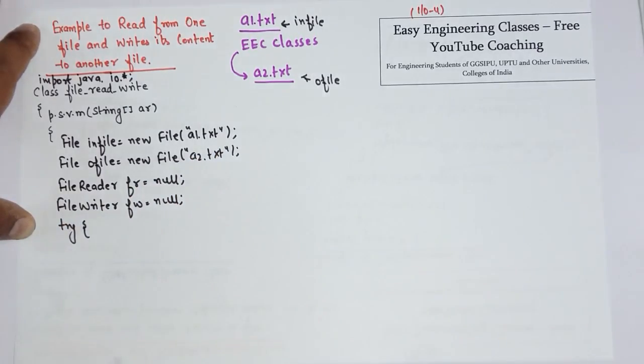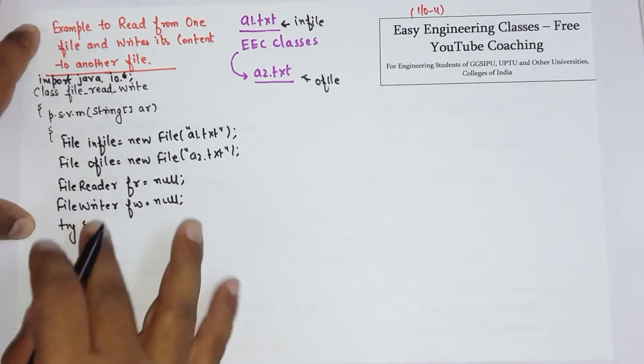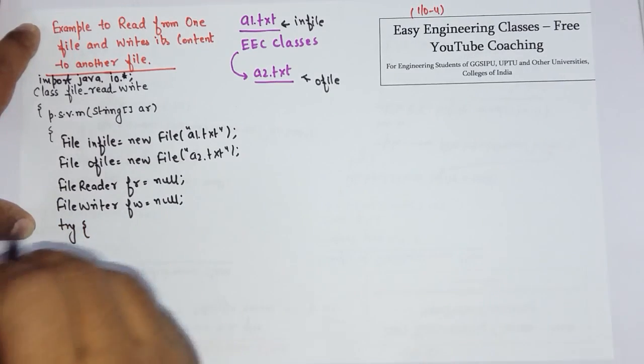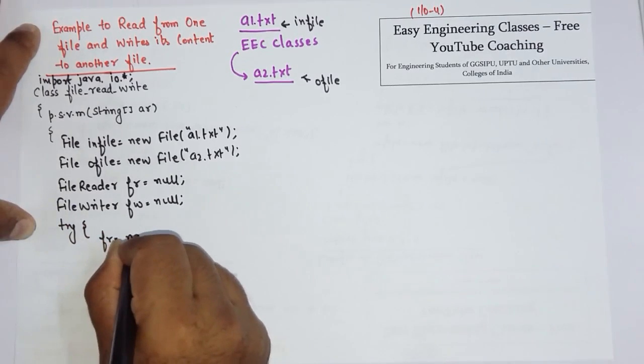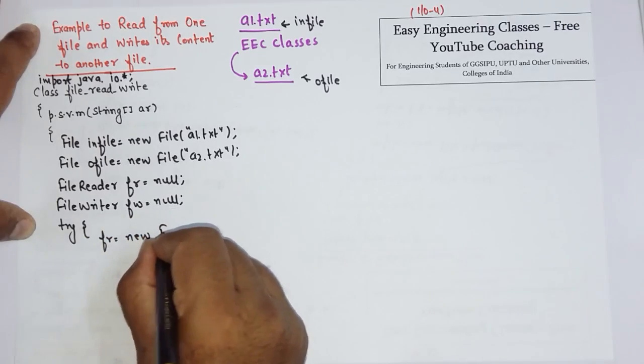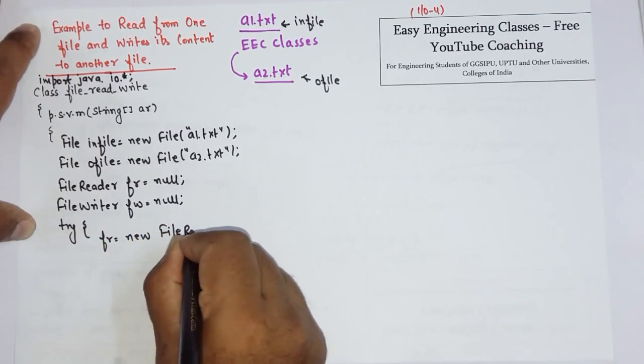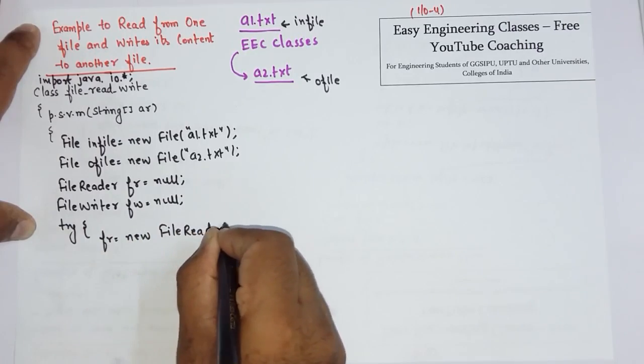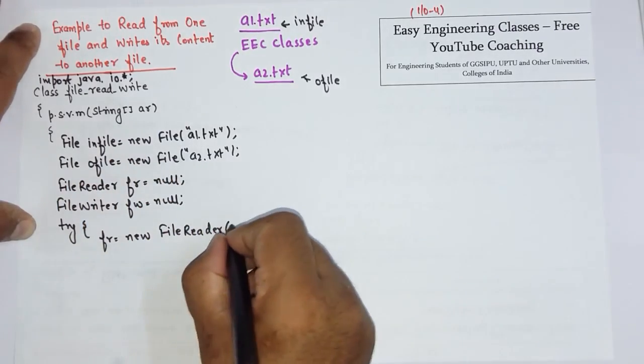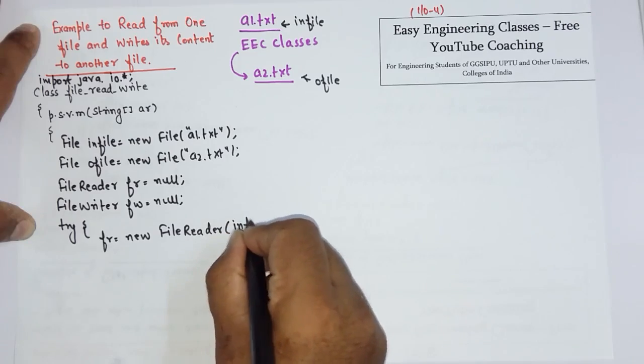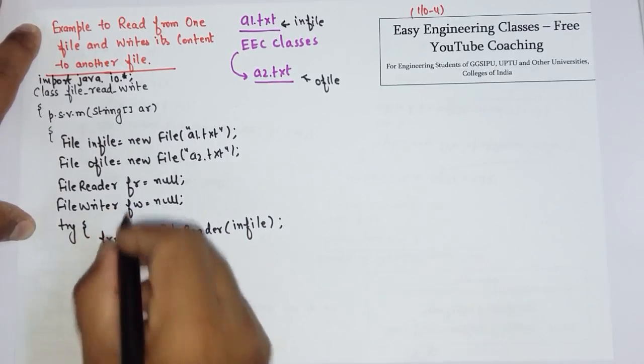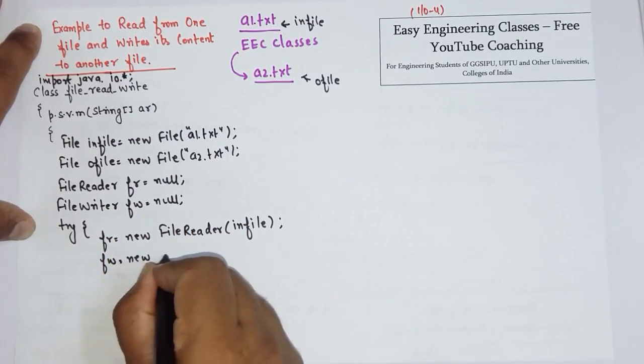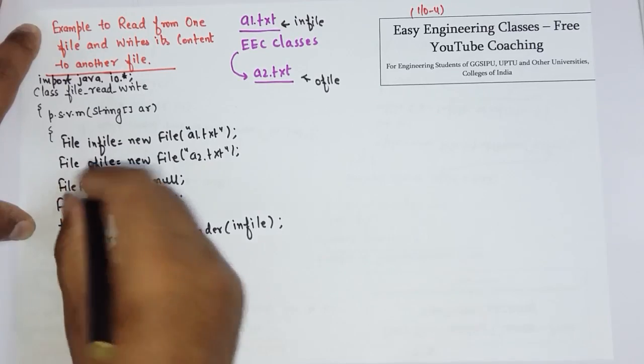Then start with the try block - here comes the main logic. So fr equals new FileReader and the type of file is in-file. And for FileWriter we will associate it with o-file.